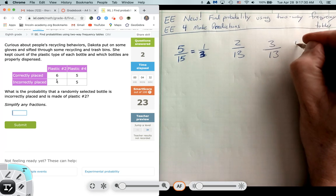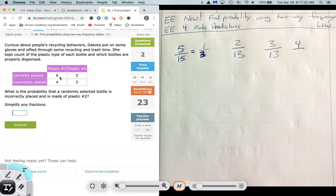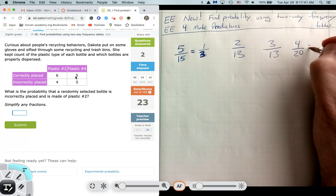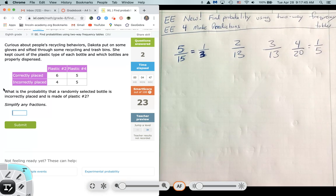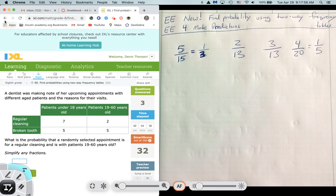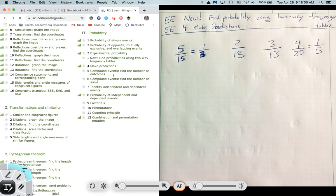So what is the probability that random selected bottle is incorrectly placed? So we're going to be looking at the incorrect row and is made of plastic number two. Plastic number two is this column here, incorrectly placed. So there's four. So we get 4 out of, then we count these up. Four and six is ten. Five and five is ten. So that's twenty. So we get 4 out of a total of 20. And that one does reduce. I'm glad we got one that reduces. Our probability that it was incorrectly placed and number two would be a 1 out of 5 chance. So we type in 1 out of 5. So just always make sure you reduce.